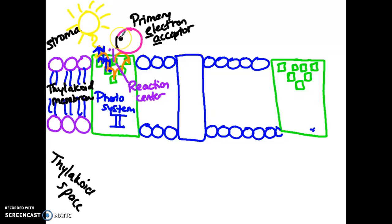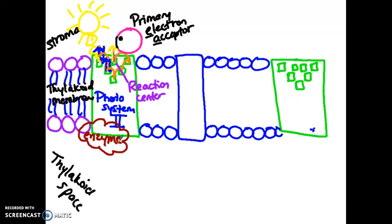We have to pause there because the next time a photon comes in and strikes that chlorophyll molecule, another electron is going to be released from the reaction center. We just can't keep losing electrons, so we need to talk about how we replenish those electrons. There is a special enzyme at the base of this photosystem. It has an active site for water, and it takes two water molecules at a time — because of chemical balance — and catalyzes them.